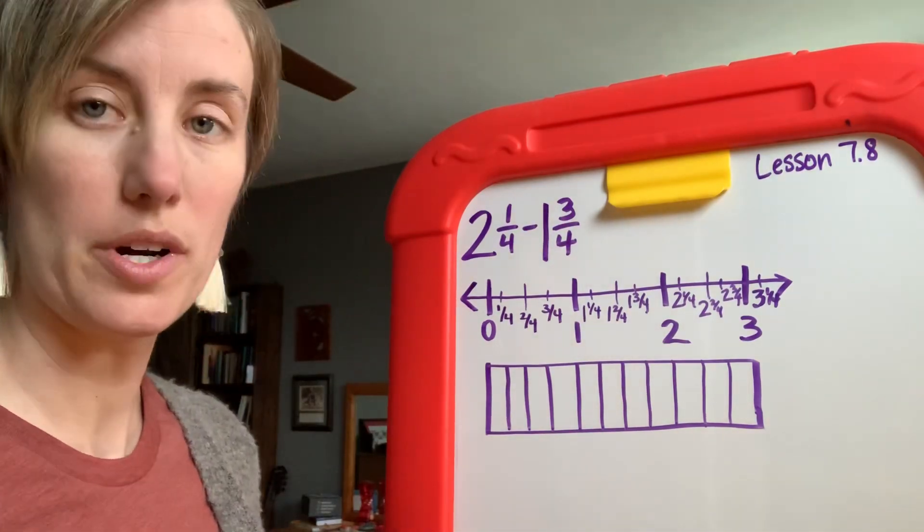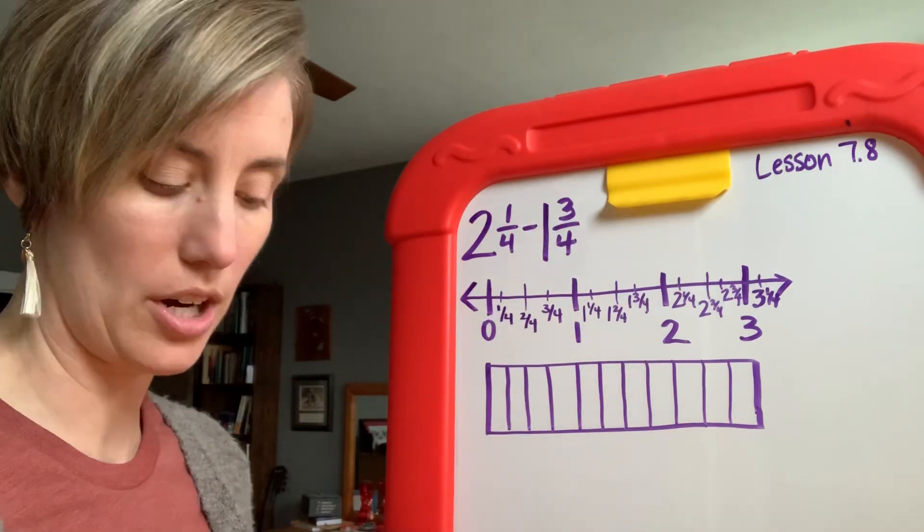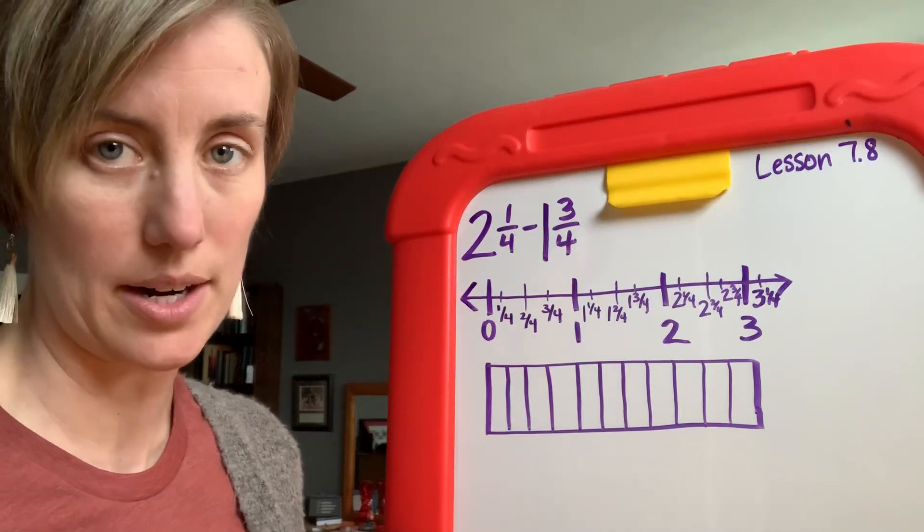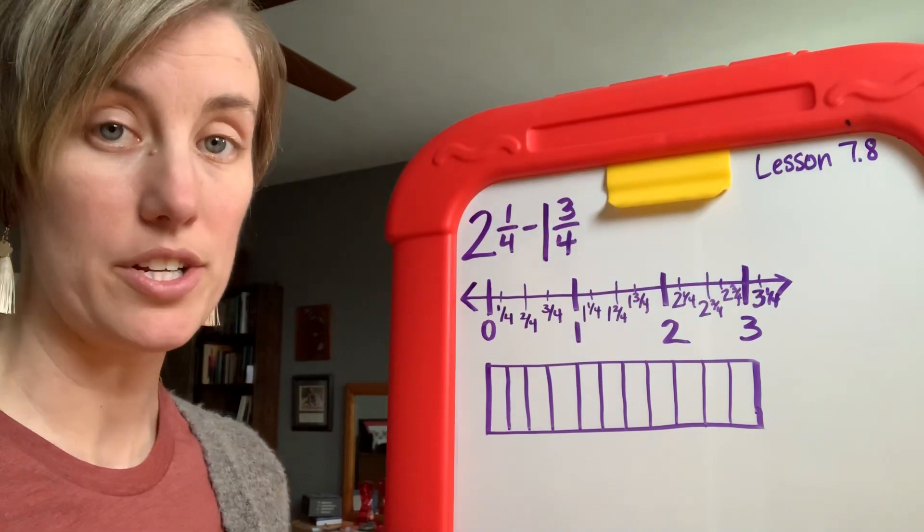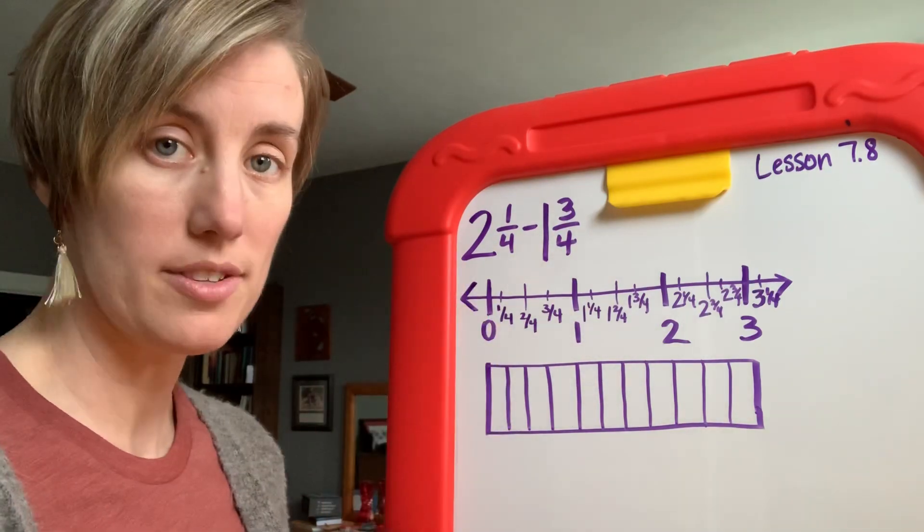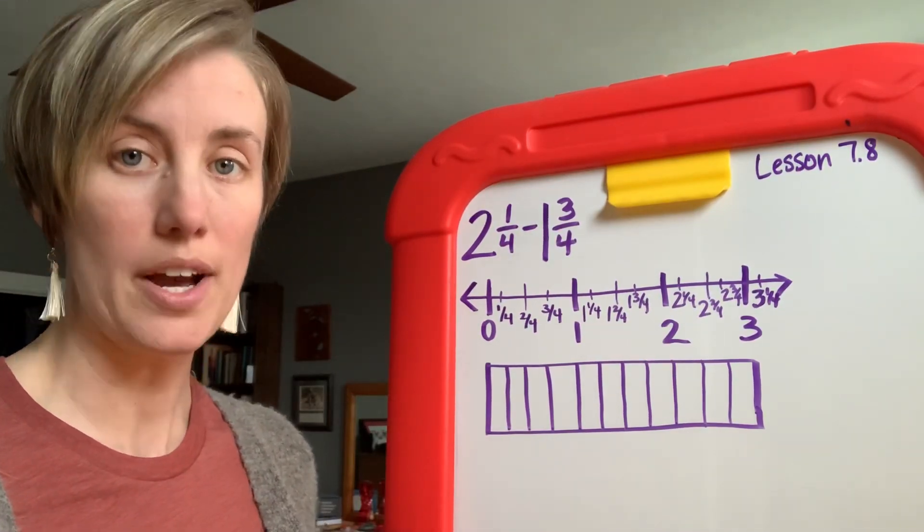On page 429 you'll see the very first problem starts with this word problem in regards to Ramon, Chandler, and Chase riding their bikes. These people are out riding their bikes and at the end of the question they ask you to find the difference between 2 and 1/4 and 1 and 3/4, and they start this off by using a model and a number line.